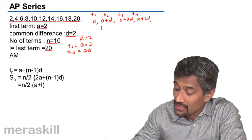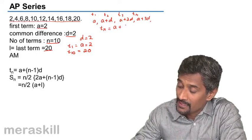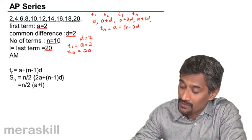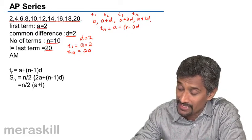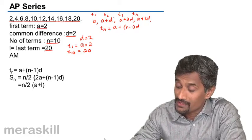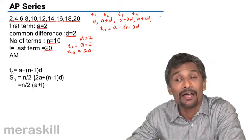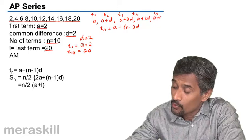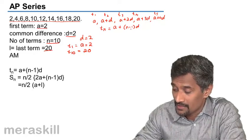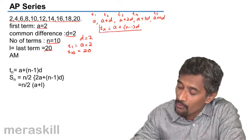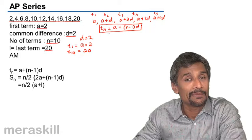You observe that each term Tn is the first term plus N minus 1 into D. For example, the third term is A plus 3 minus 1 into D. The fourth term is A plus 4 minus 1, 3D. Second term is A plus 2 minus 1, 1D. So, on that basis, the fifth term would be A plus 5 minus 1, that is 4D. Every term is A plus the previous term's cardinal number into D. This is the formula for the nth term of any arithmetic progression.